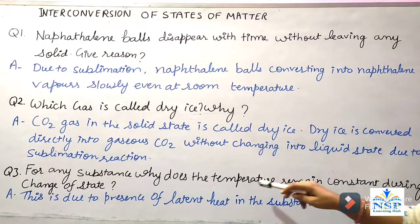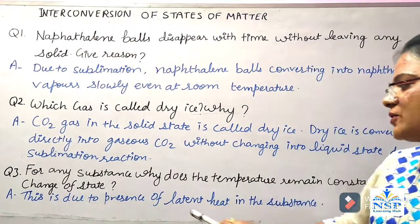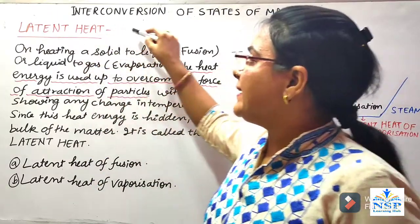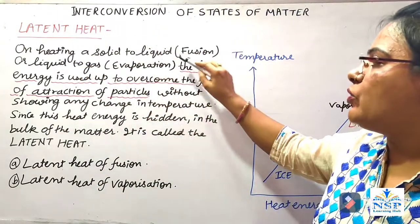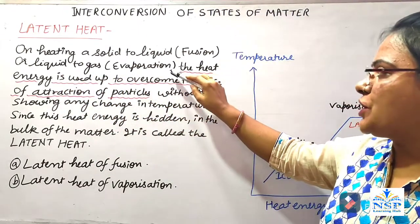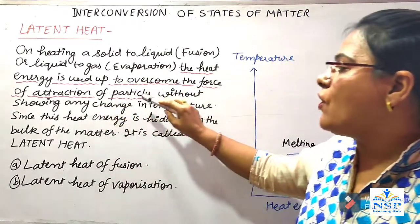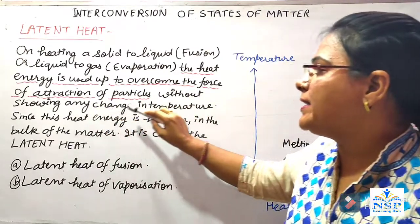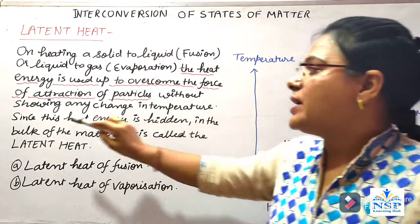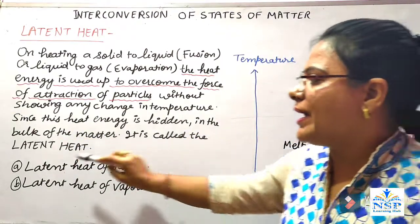For any substance, why does temperature remain constant during change of state? This is due to the presence of latent heat in the substance. On heating a solid to liquid (fusion) or liquid to gas (evaporation), the heat energy is used up to overcome the force of attraction of particles without showing any change in temperature — the temperature remains constant.